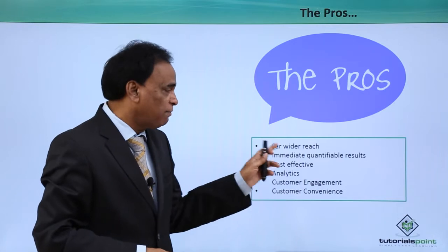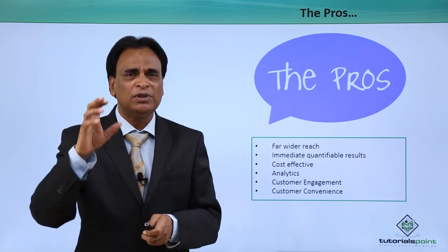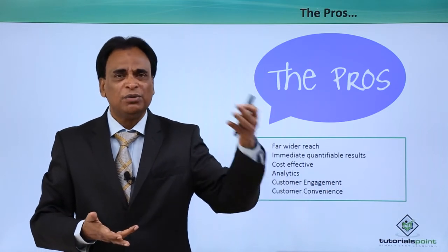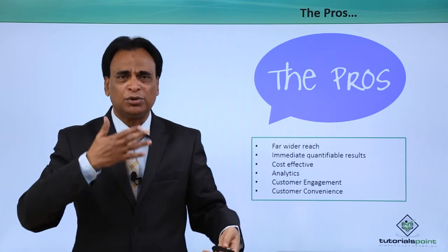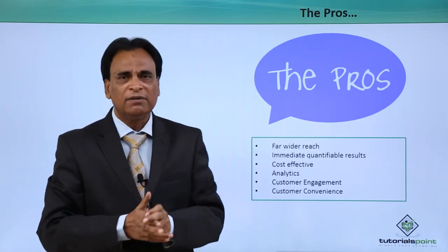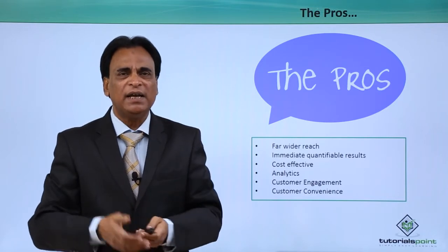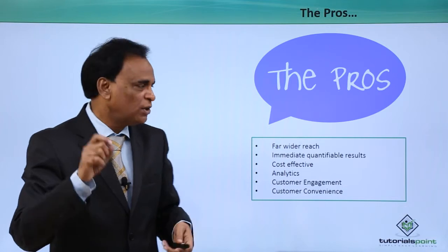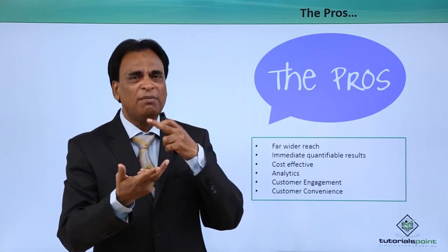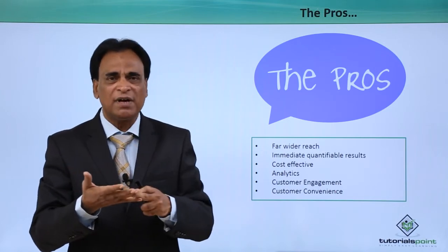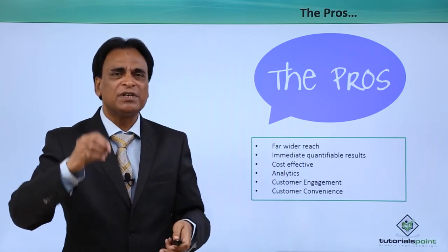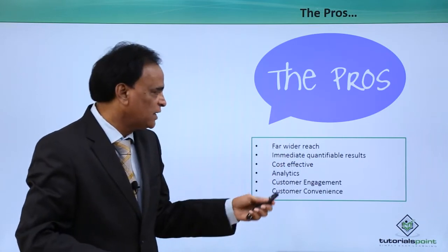What are the pros associated with online marketing? Far wider reach — you can reach anybody anywhere in the world through a website, blog, landing page or social media. Traditional marketing through newspapers, brochures, banners or hoardings is geographic-centric and cannot go beyond a particular border. But a website is available online to anyone anywhere in the world. Immediate quantifiable results — you know instantly what traffic is coming to your website, how many pages they have seen, what products they viewed, where they came from, the geography, the demography, and how much time they spent. Every quantifiable piece of information is available at your fingertips instantly.